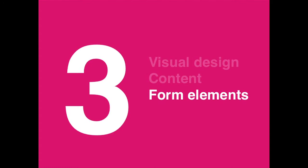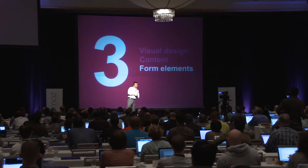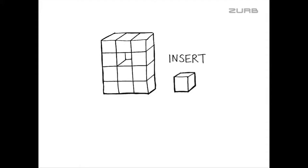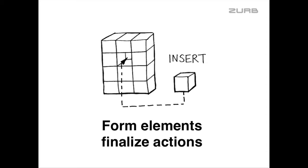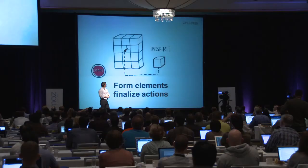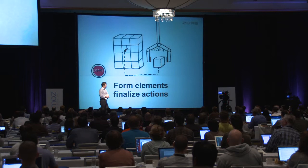The third part is form elements. If visual design is setting the context and content is driving the action, form elements are what allow the action to actually happen. Going back to our concept: you have a box, you're told to insert it, and the form elements tell you how. In this case you're directed through a form element — a start button gets you thinking about what will happen — and then you're given a mechanism to actually put the box in. Form elements finalize those actions and bring content and visual design full circle.